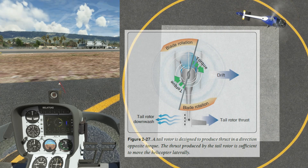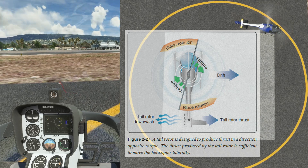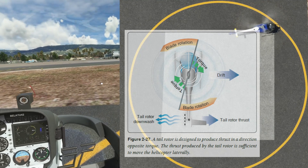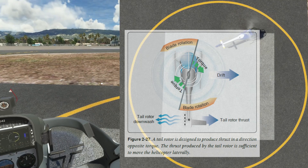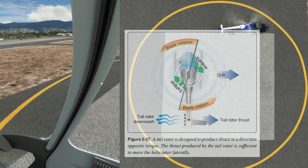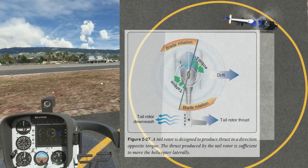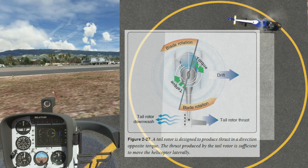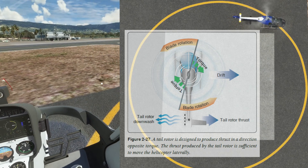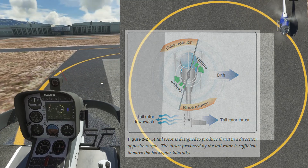So we get a situation called a skid low. In a counterclockwise system, like a Bell or a Robinson, you get a left skid low. And in a clockwise system, like the Cabri, you get a right skid low. So when you actually lift off the ground, because of the translating tendency, the helicopter wants to drift to the left because of the tail rotor thrust. So you counteract it with a little bit of right cyclic, which causes the right skid to hang a little bit low.